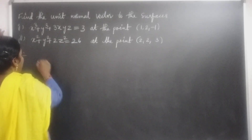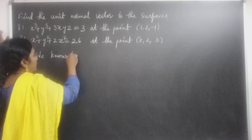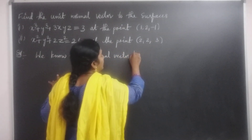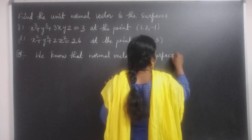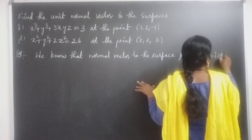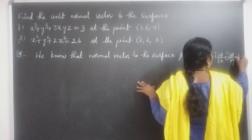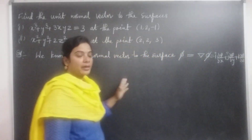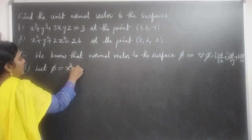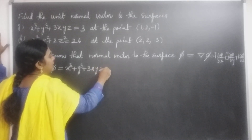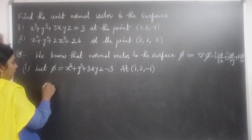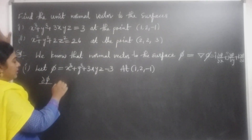How we can find the unit normal vector? We know that the normal vector to the surface φ equals del φ, that is i ∂φ/∂x plus j ∂φ/∂y plus k ∂φ/∂z. For the first problem, let φ = x³ + y³ + 3xyz − 3 at point (1, 2, −1). We find the partial derivatives.